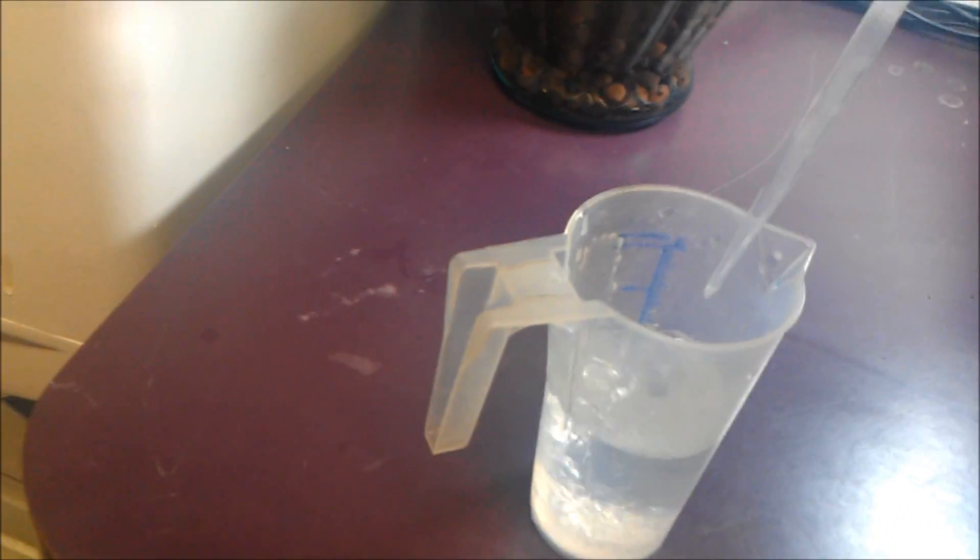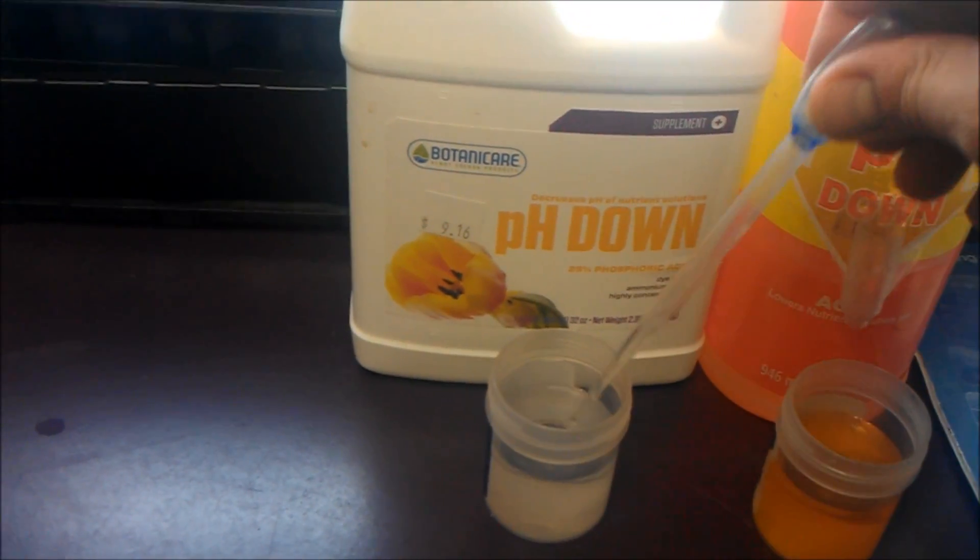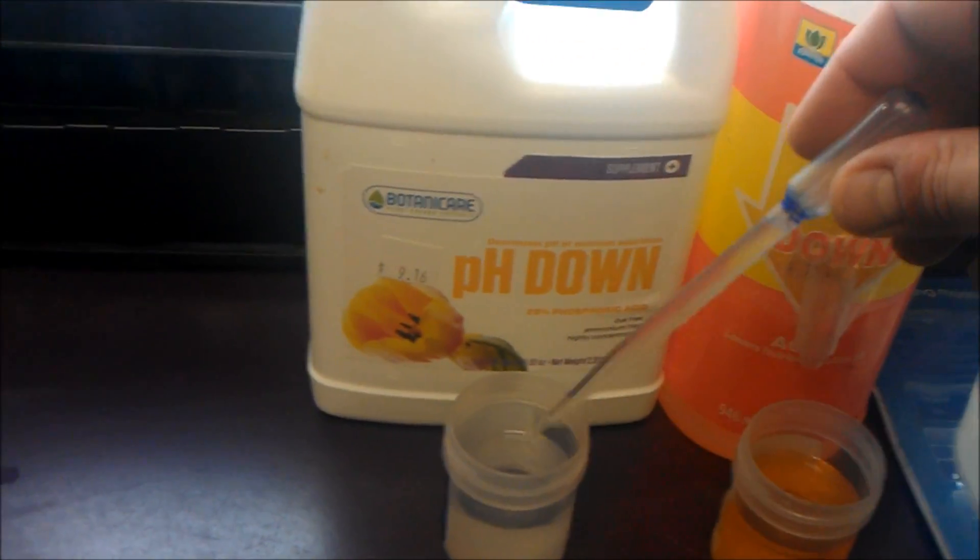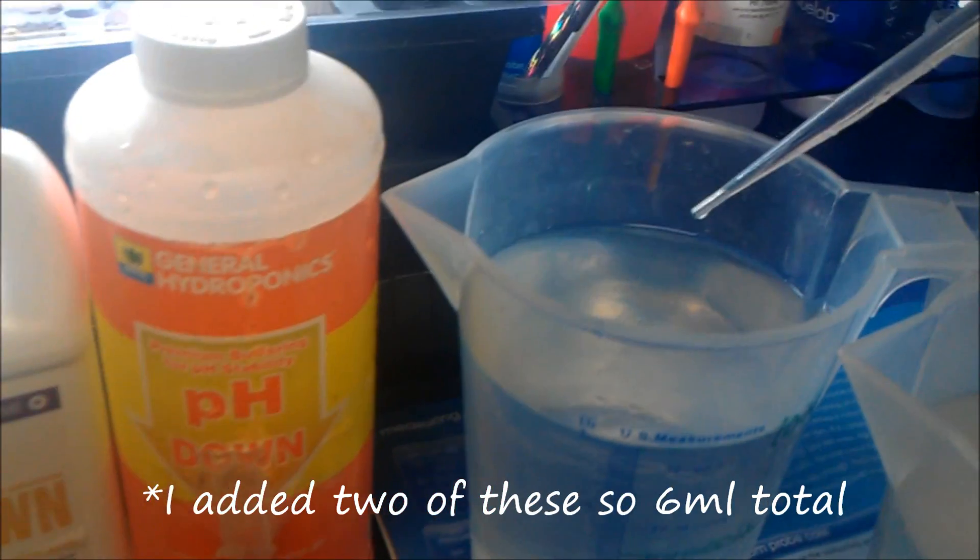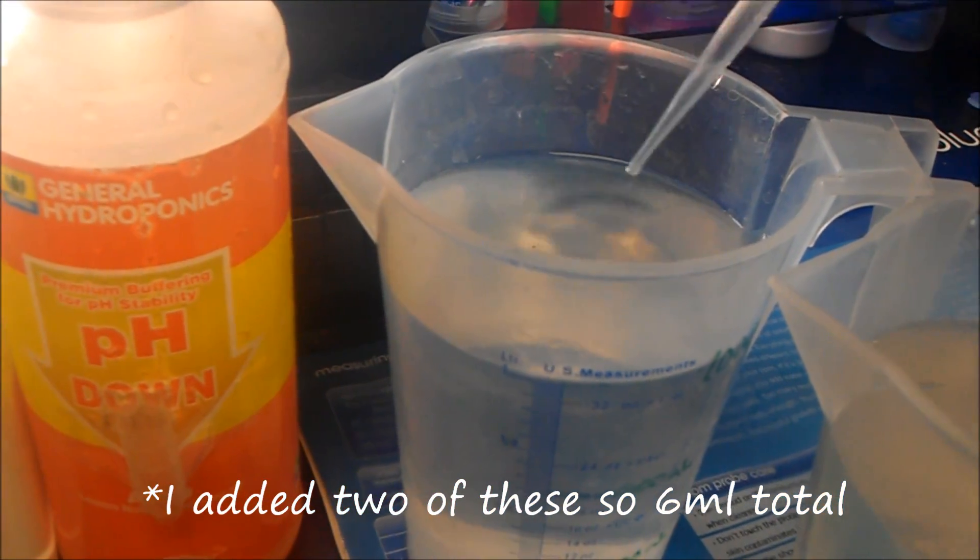Let me rinse this off in some sterile water real quick. Now I'm going to do the same thing with the Botanic Care. There we go, 3ml. Again, I'll add this to the original 1000ml.